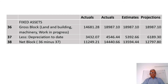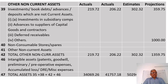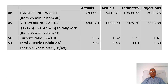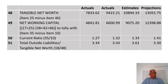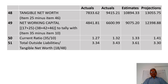Form No. 3 also shows fixed assets — gross block, less depreciation, and net block — as well as non-current assets, intangible assets, and total assets. It further provides key financial metrics such as tangible net worth, net working capital, current ratio, and total outside liabilities to tangible net worth ratio. This is how Forms No. 1, 2, and 3 look like. We will cover Forms No. 4, 5, and 6 in the next video.